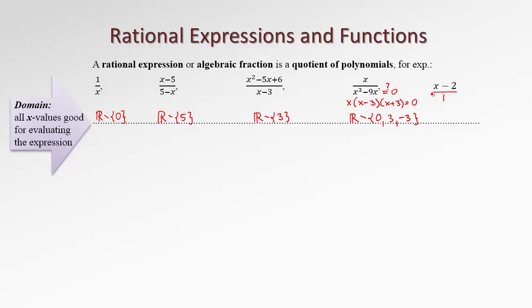Finally, this artificial rational expression, which is actually just a polynomial, has a domain all real numbers. There is no problem with denominator. Denominator is always one, it will never be zero. So as for any polynomial, the domain is all real numbers.